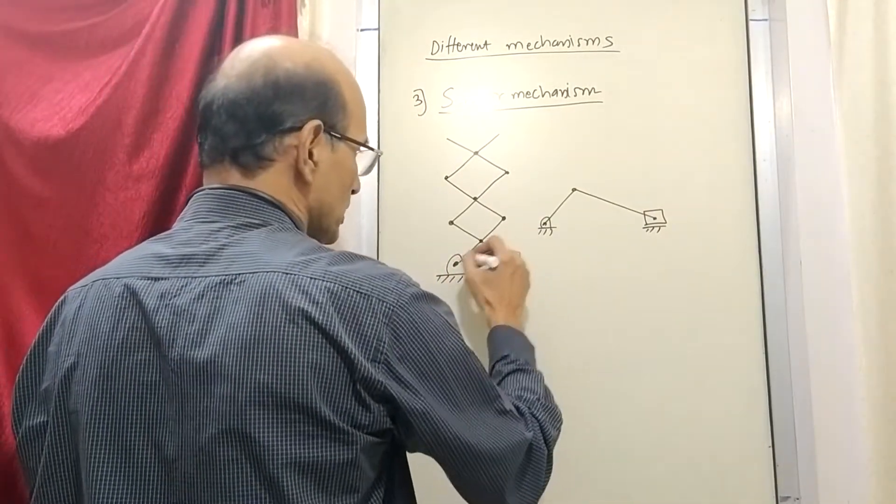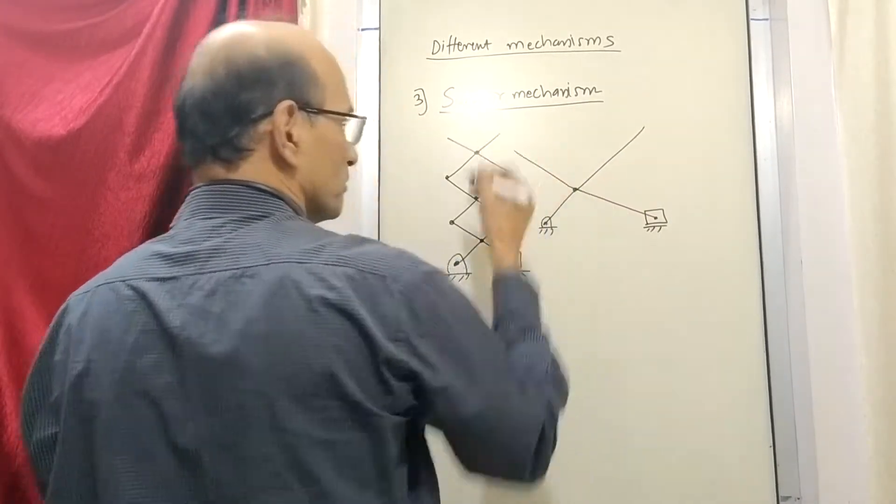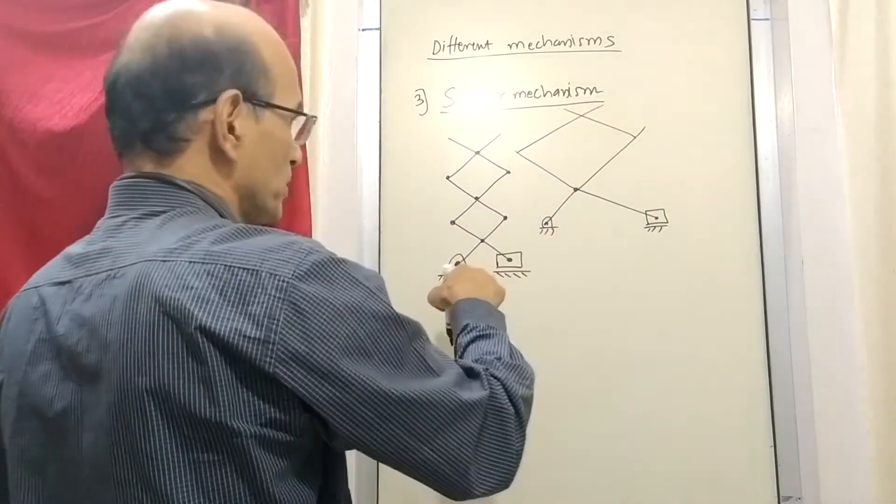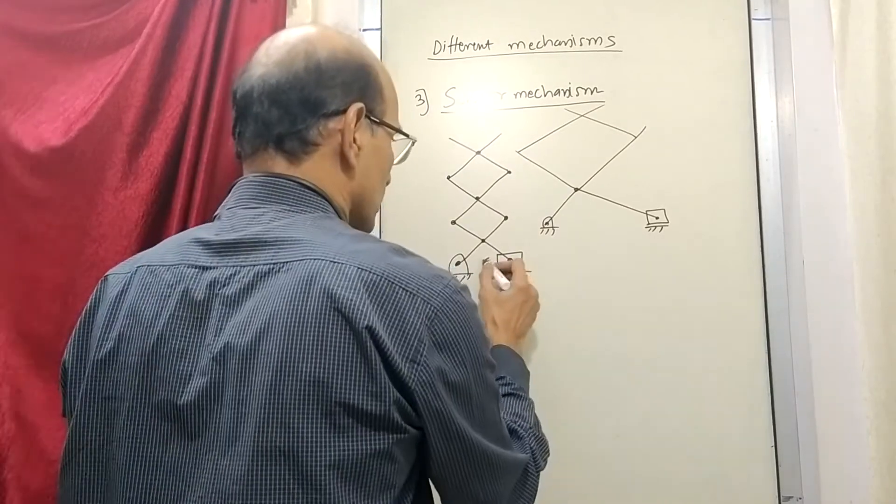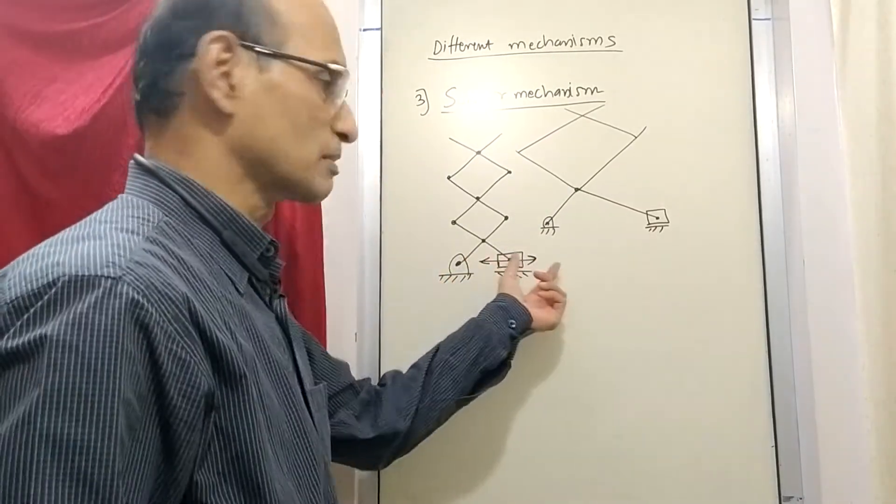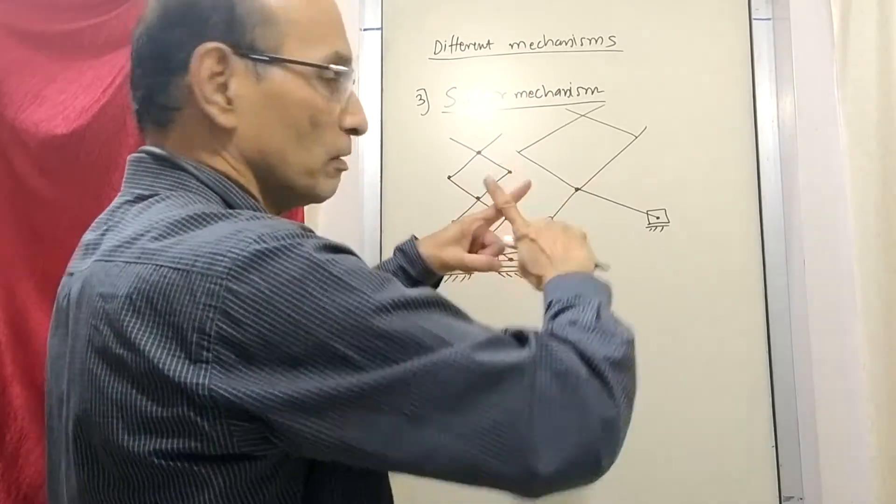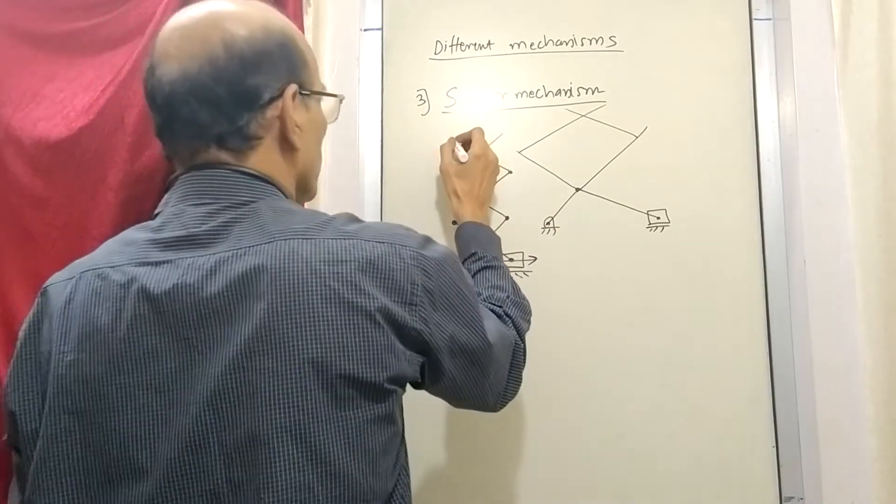Now what you will find is this much part is a typical slider and crank mechanism which we have drawn earlier. This part is this. So only what you have done, this link number 2 is extended and link number 3 also is extended. And then another arrangement is made. So now what happens when you move it like this, when you slide this particular slider, then this entire mechanism gets shifted.